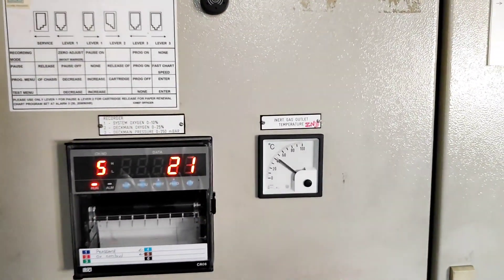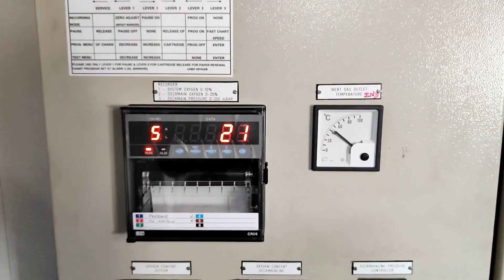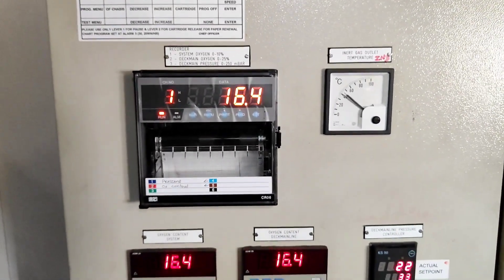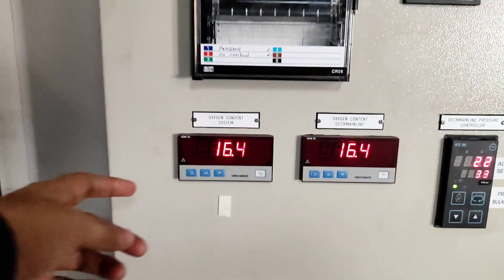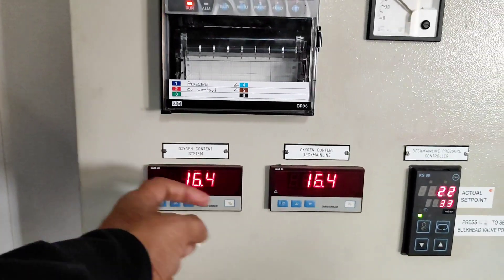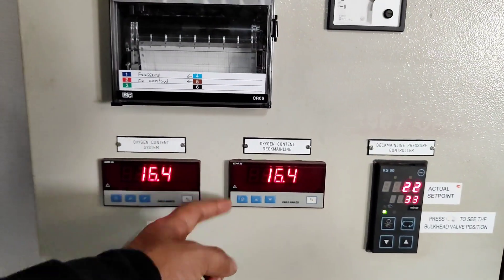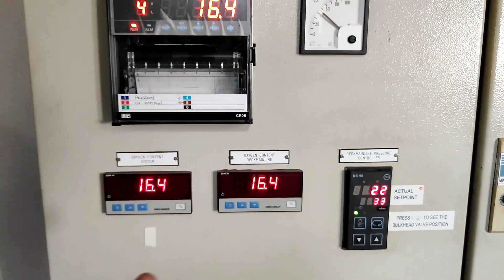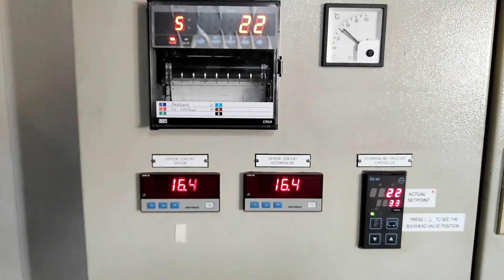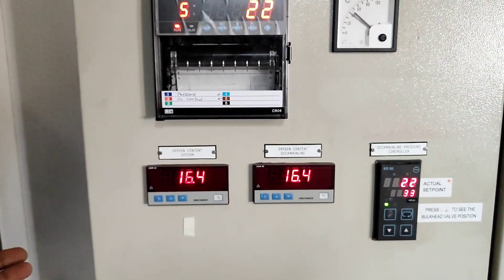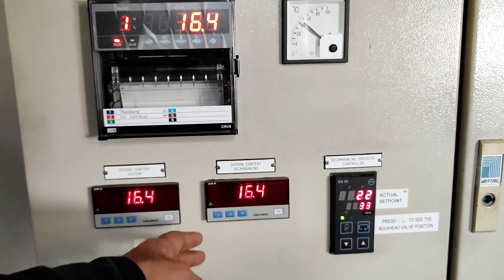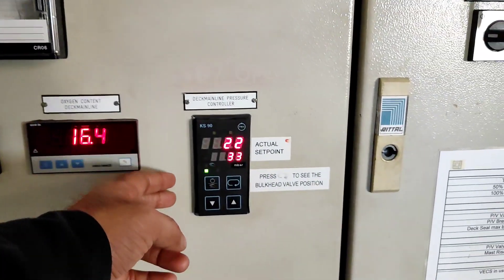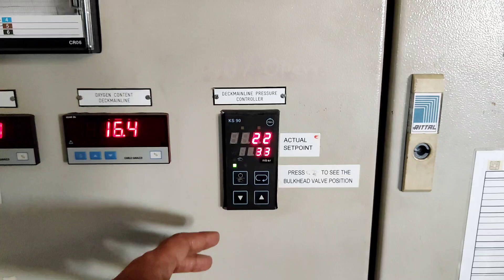Also down you will have oxygen content system and oxygen content deck main line. So system and the deck and main line, it shows the difference basically - whatever generator or boiler is making and then whatever you are getting in the deck.